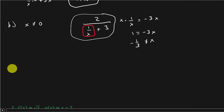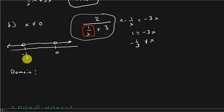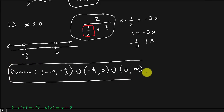So what is our domain? Our domain is everything but negative one third and zero. The easiest way to write out the domain is to look at it on the number line — we've got negative one third and we've got zero, and the domain is the entire number line except for those two values. So our domain is from negative infinity to negative one third, union negative one third to zero, union zero to infinity. And this is your answer.